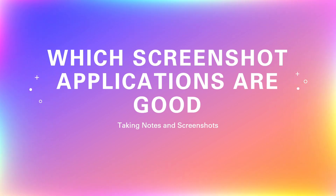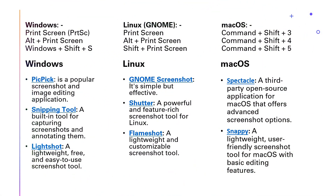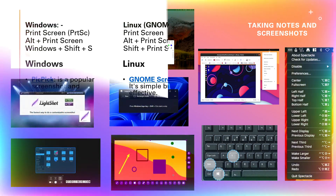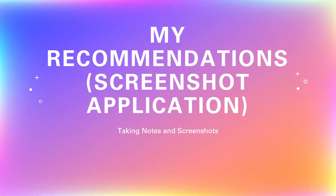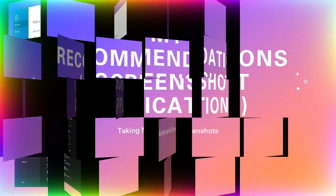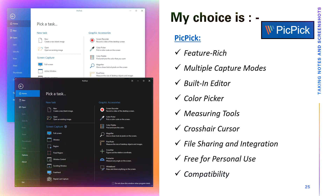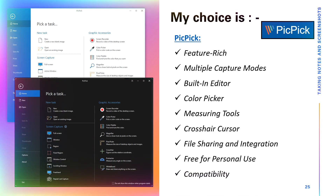Which screenshot applications are good? There are shortcuts for taking screenshots in different operating systems. For Windows: PicPick, Snipping Tool, and LightShot. For Linux: GNOME Screenshot, Shutter, and Flameshot. For macOS: Spectacle and Snappy. My recommendation is PicPick, because it is feature-rich with multiple capture modes, a built-in editor, color picker, measuring tools, crosshair cursor, file sharing and integrations, free for personal use, and broad compatibility.